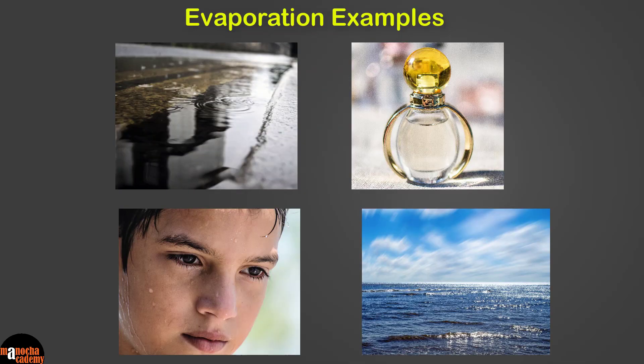One example of evaporation is drying of clothes. Let's look at some other simple everyday examples of evaporation. Can you identify what is the evaporation in the pictures here? The puddles of water formed on the road after rain disappear after some time. Why? Because the water evaporates — the liquid water changes into water vapor.